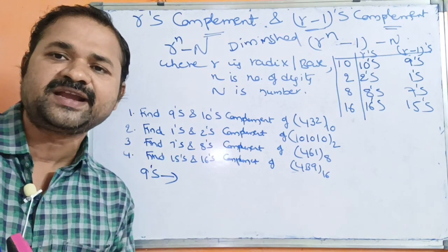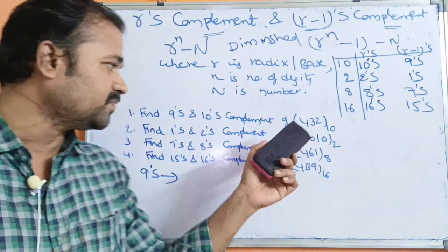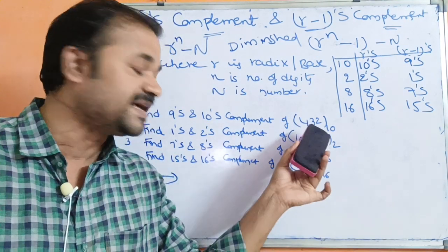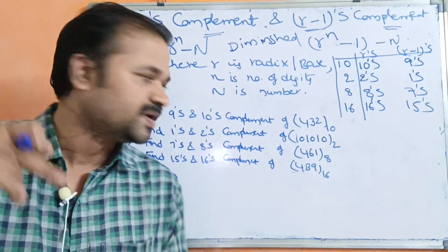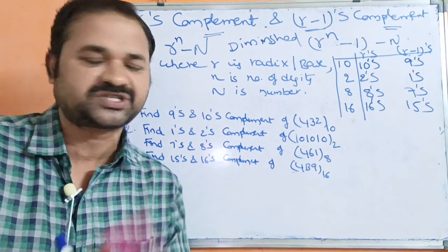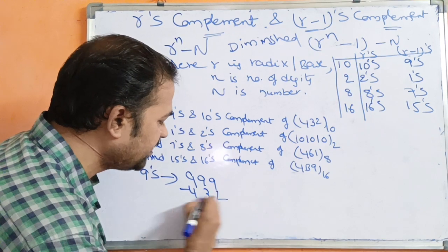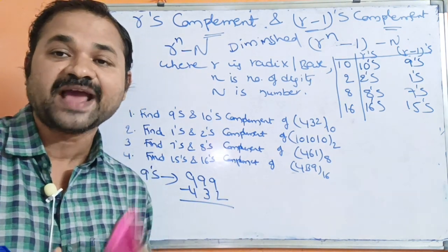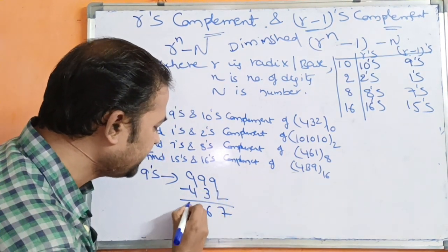To calculate 9's complement, we simply subtract the given number from 9's. The number 432 contains 3 digits, so we subtract from three 9's. 9 minus 2 is 7, 9 minus 3 is 6, 9 minus 4 is 5. So the 9's complement is 567.